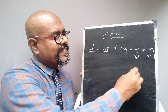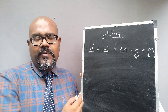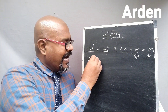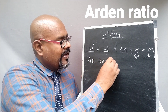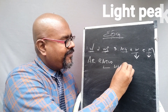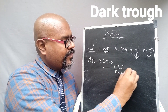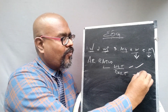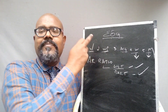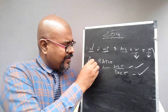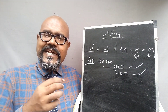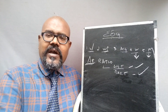The last question: what would you diagnose using these techniques? We are supposed to take the Arden ratio. The Arden ratio is nothing but the light trough divided by dark trough. The patient is supposed to measure their resting potential during the dark and during the light.